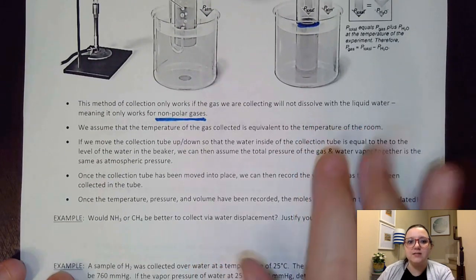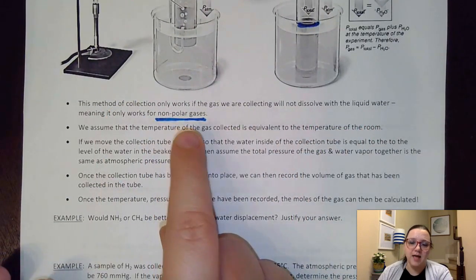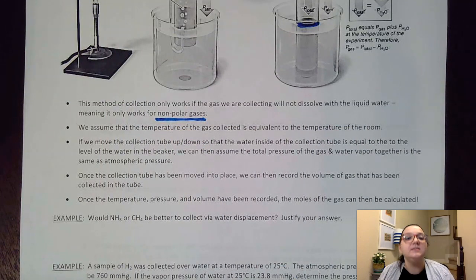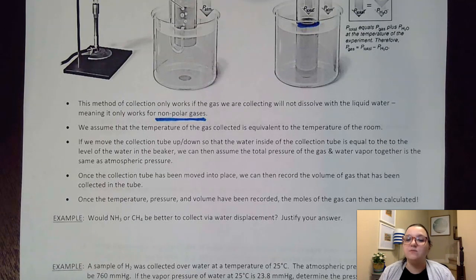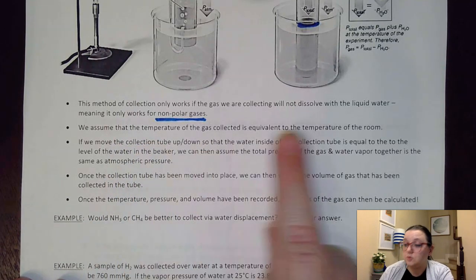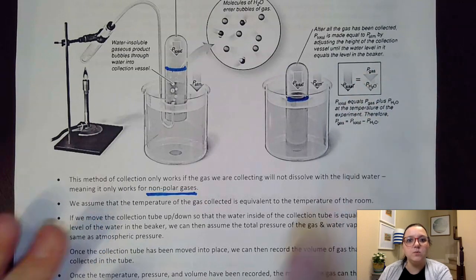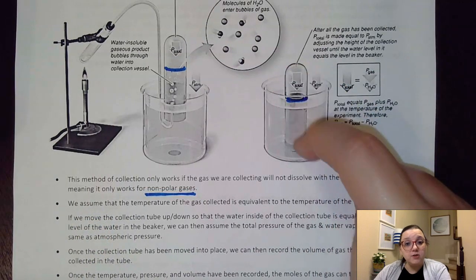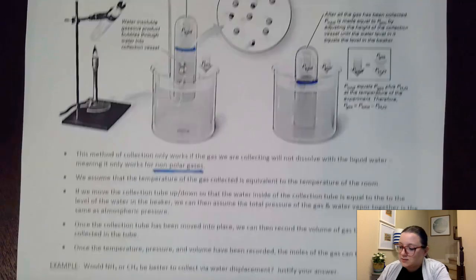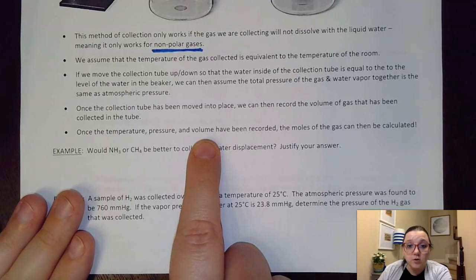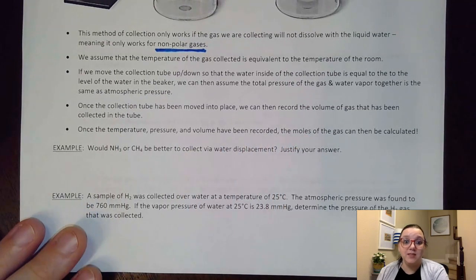Now one thing I do want to notate here is that this method only works for non-polar gases. If you have a polar gas, the problem is that it will dissolve in the water itself. And so you won't be collecting as much of that gas as you really have been producing. And so it's going to give you data that's very off from what it really should be. One of the other pieces of data we can get is that the temperature of the gas is assumed to be the temperature of the room. And so if you think about all those pieces of data we have now, we have the temperature of the room. We'll have the pressure of the gas once we do our subtraction. If we used an inverted graduated cylinder here, we would have our volume. And so once we have the temperature, pressure, and volume, you could use PV=nRT to calculate the number of moles that would be then collected.